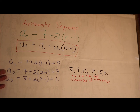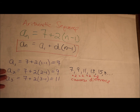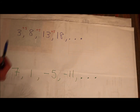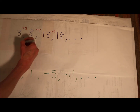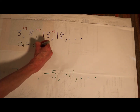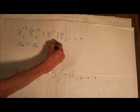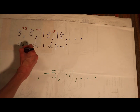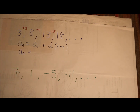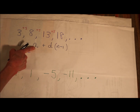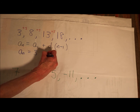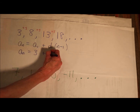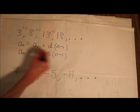Let's practice some more arithmetic sequences and see if we can come up with the equations. Here is an arithmetic sequence: plus 5, plus 5, plus 5. Let's follow that same blueprint. The nth term equals the first term plus the common difference times n minus 1. So: the nth term equals 3 — the first term — plus 5 — the common difference — times n minus 1.